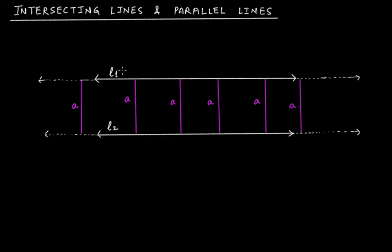Such lines — L1 and L2 — where the distance between them always remains constant, whether you measure at this position or that position, or anywhere up to an infinite extent on either side, are called non-intersecting lines or parallel lines.